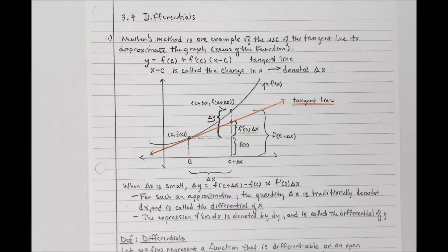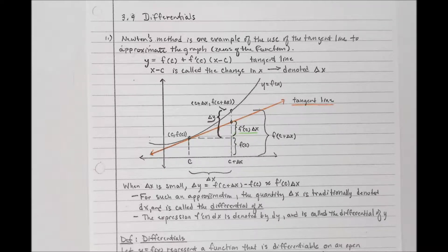Chapter 3, Section 9: Differentials. In the last section we looked at Newton's method as an example of using the tangent line to approximate a graph and find zeros of a function. But there's more than one approach and more than one set of notation to help us do that.